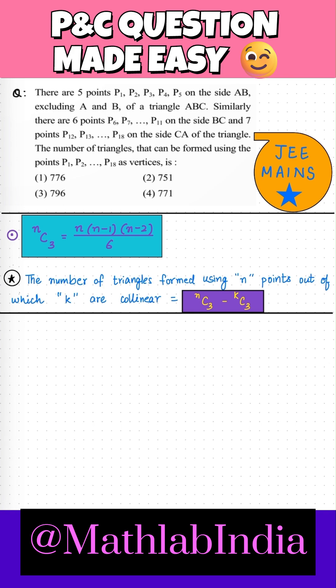According to the formula given here, the number of triangles formed using n points out of which K are collinear is given by nC3 minus kC3, right?